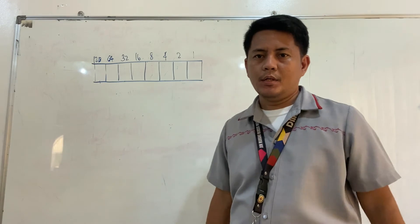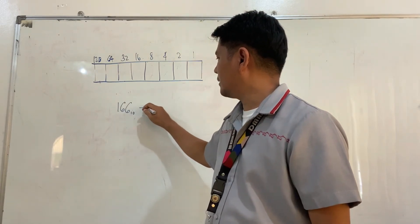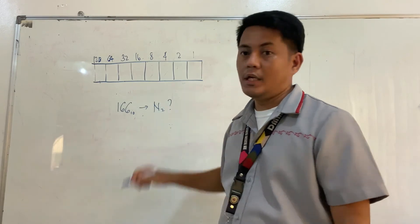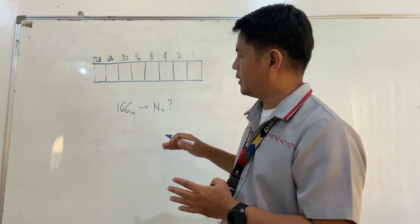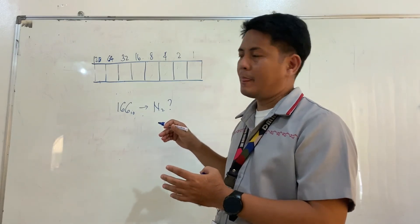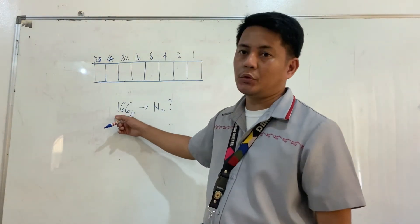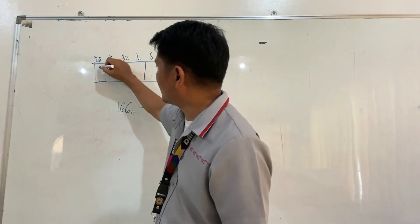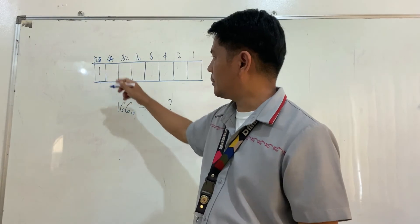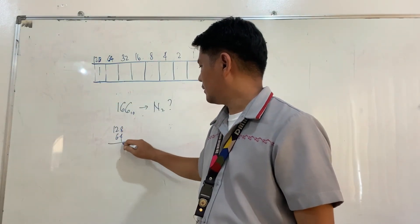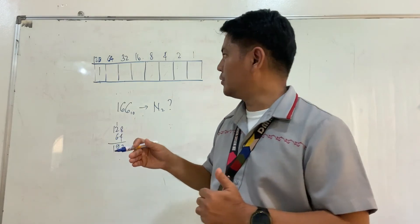Let's have another example. Let's convert the decimal number 166 base 10 into its binary equivalent. We find numbers whose sum equals 166. We need 128, so we turn it to 1. How about 64? Well, 128 plus 64 is 192, which already exceeds 166, so we do not need 64 — we turn it to 0.